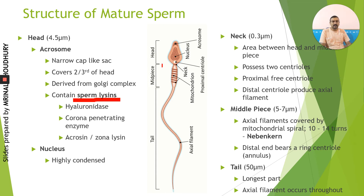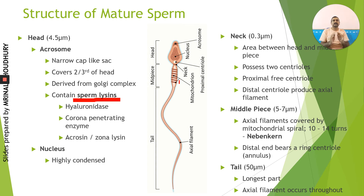Coming to the neck region — a small area between the head and middle piece — it is 0.3 micrometers long and contains two centrioles: the proximal and distal centriole. The distal centriole produces axial filaments, while the proximal centriole will have its function only after fertilization. The middle piece is around 5 to 7 micrometers long. Here the axial filaments are surrounded by mitochondria arranged in a spiral manner — around 10 to 14 turns — forming a structure called the nebenkern. The distal end bears a ring centriole called the annulus.